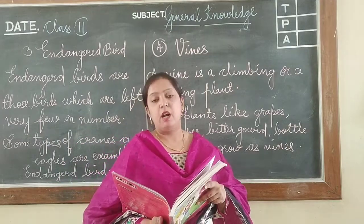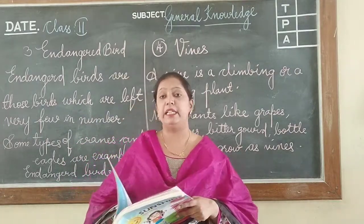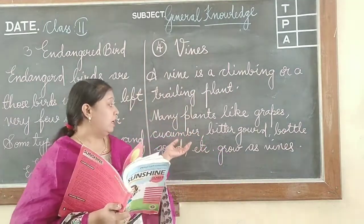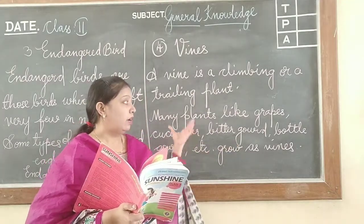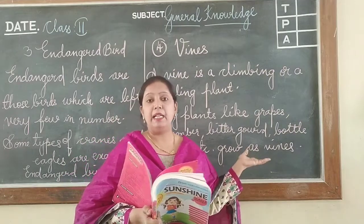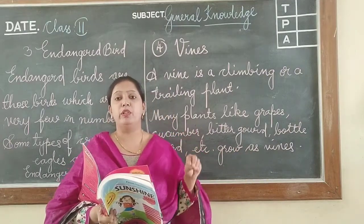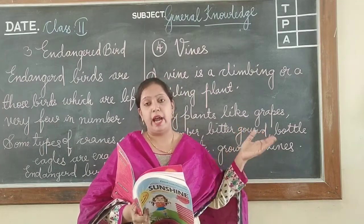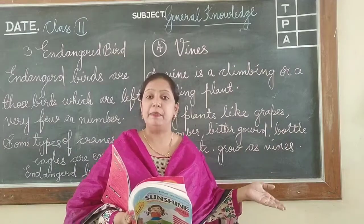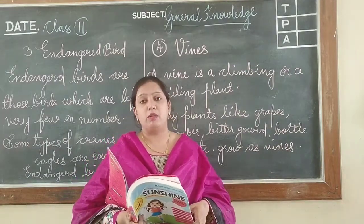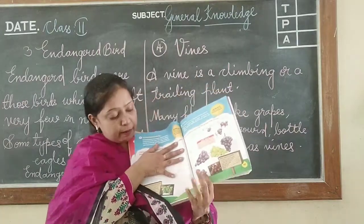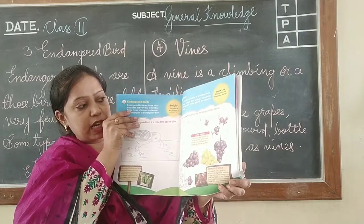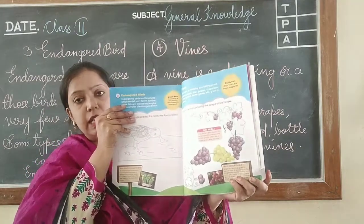Vines are also known as creepers — their stems need support and they grow and spread on the ground. Many people plant this type of plant in their homes. You just put the seed in the soil and in a few days the stem grows and spreads all over the ground. On page number 227 there is an activity: have fun while coloring the grape vines below.